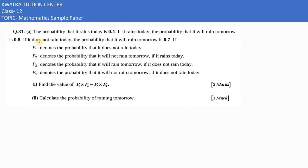In part (a), it says the probability that it rains today is 0.4. So chances hain ki 0.4 probability hain ki ho sakti hain — but what about 'does not rain'? That would be 1 minus 0.4, which is 0.6. So p1 is 0.6, which denotes that it does not rain today.